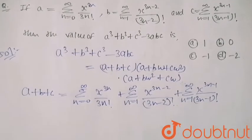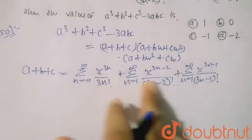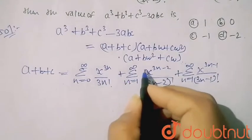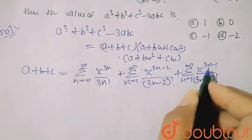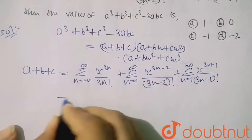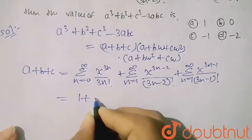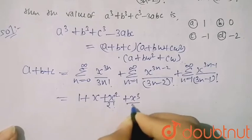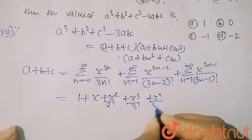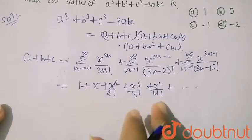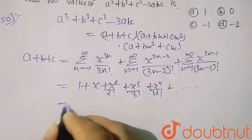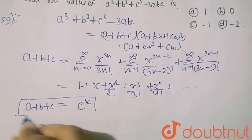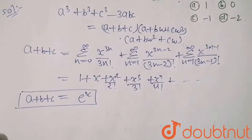You can see that the powers are multiples of three, multiples of three minus one, and multiples of three minus two. Combining these, the series becomes 1 + x + x²/2! + x³/3! + x⁴/4! and so on, which is the expansion of eˣ. So a+b+c = eˣ.